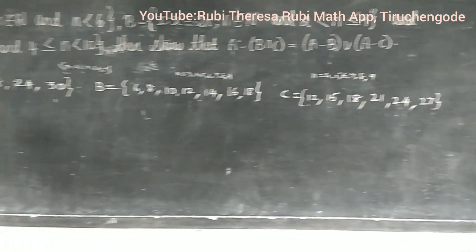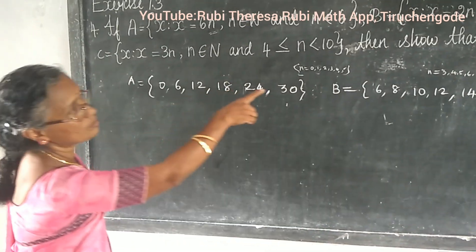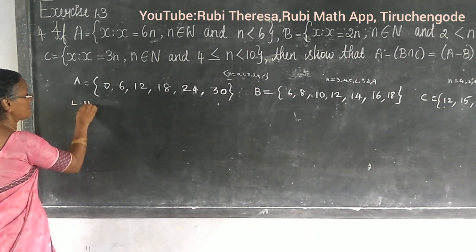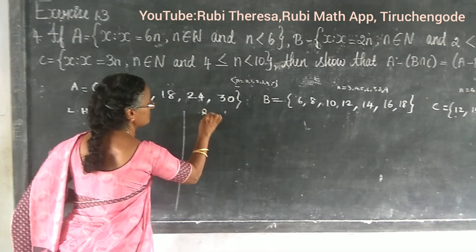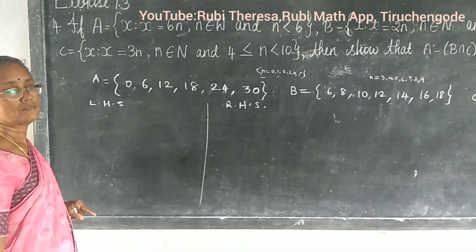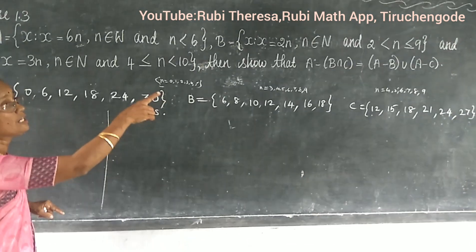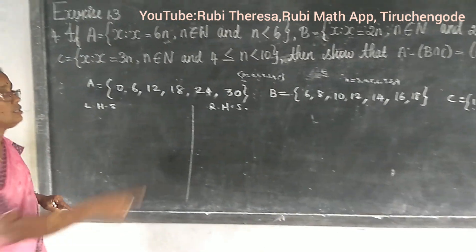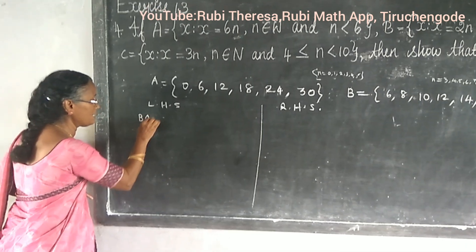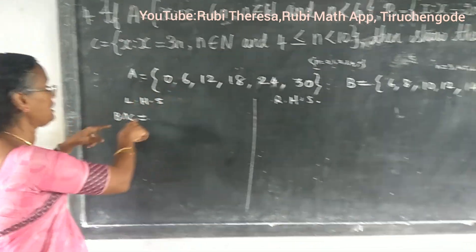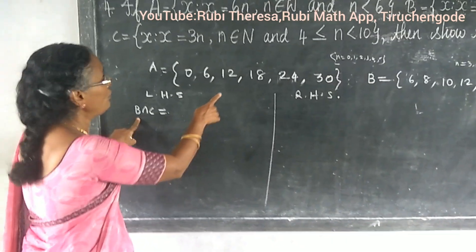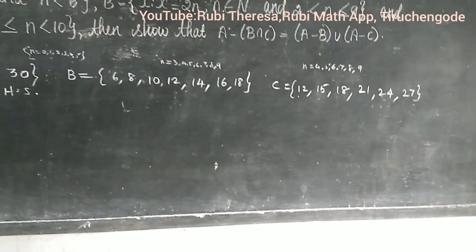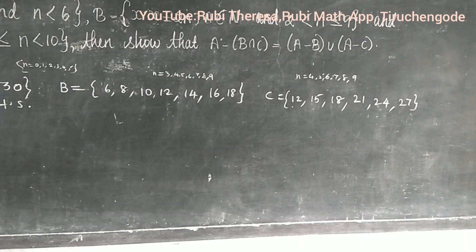First, write sets A, B, and C in roster form. Then the operations given are A difference B intersection C, and A difference B union A difference C. To start, find B intersection C — the common elements between B and C. Tell me, what are the common elements?